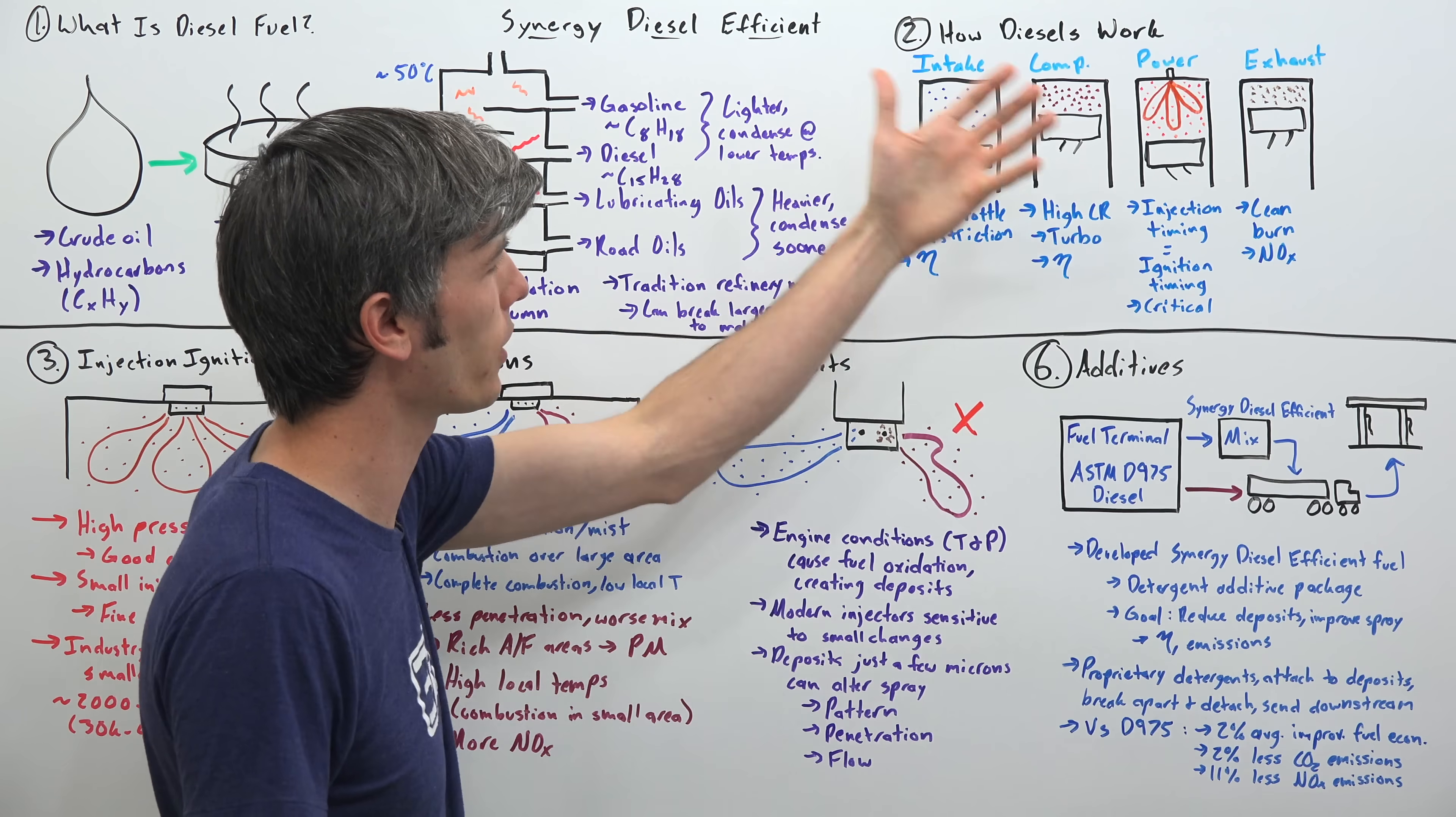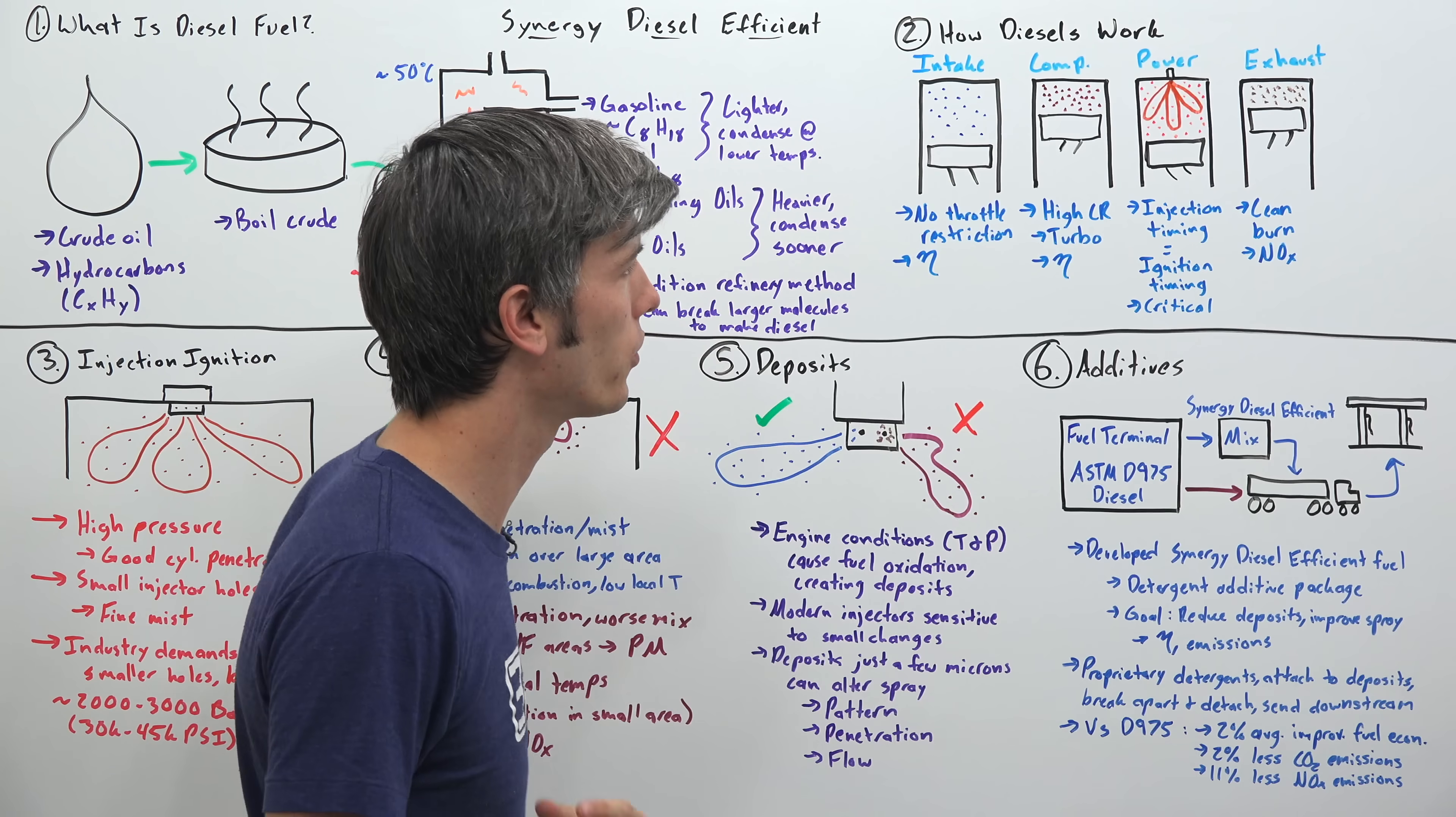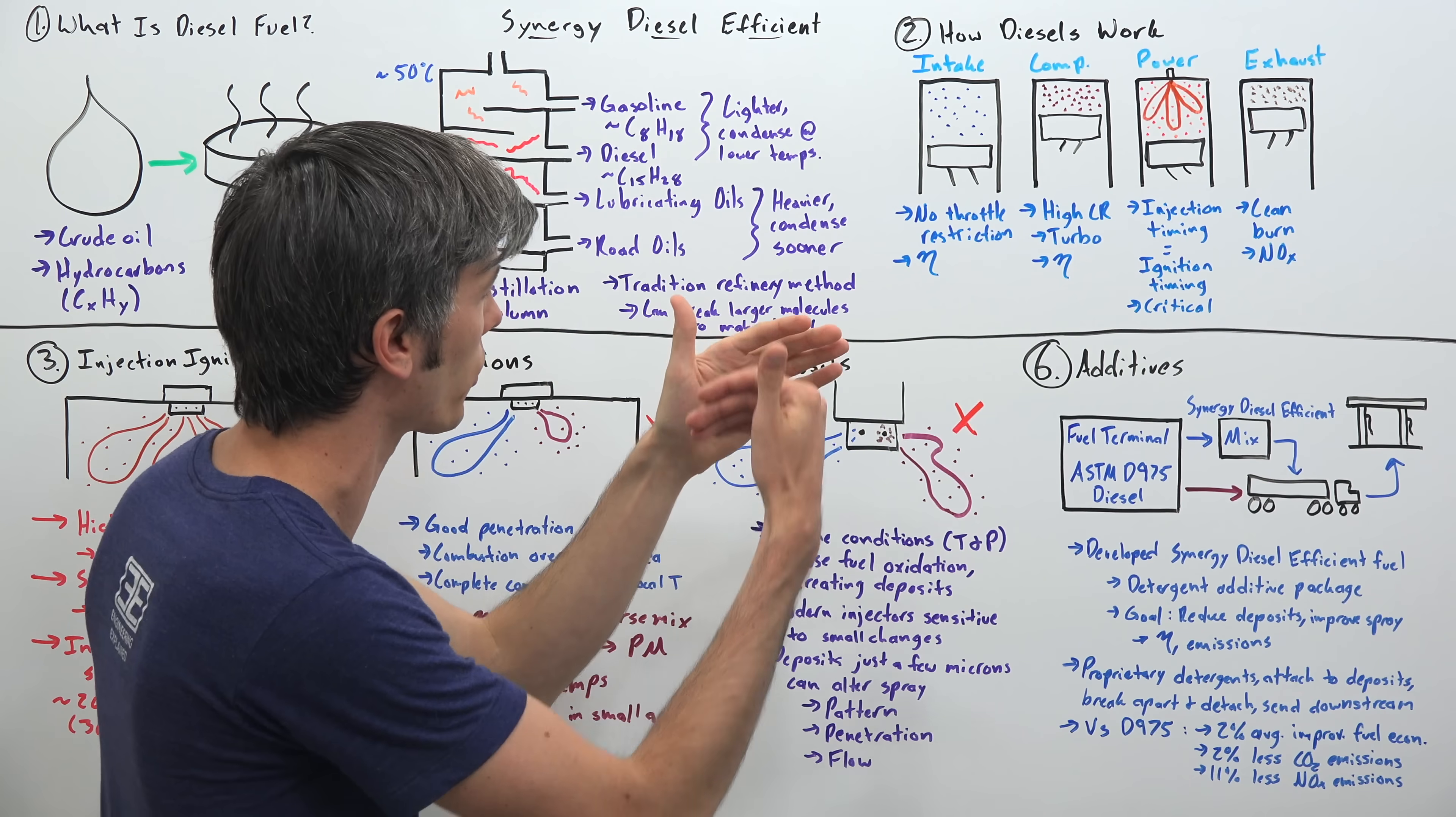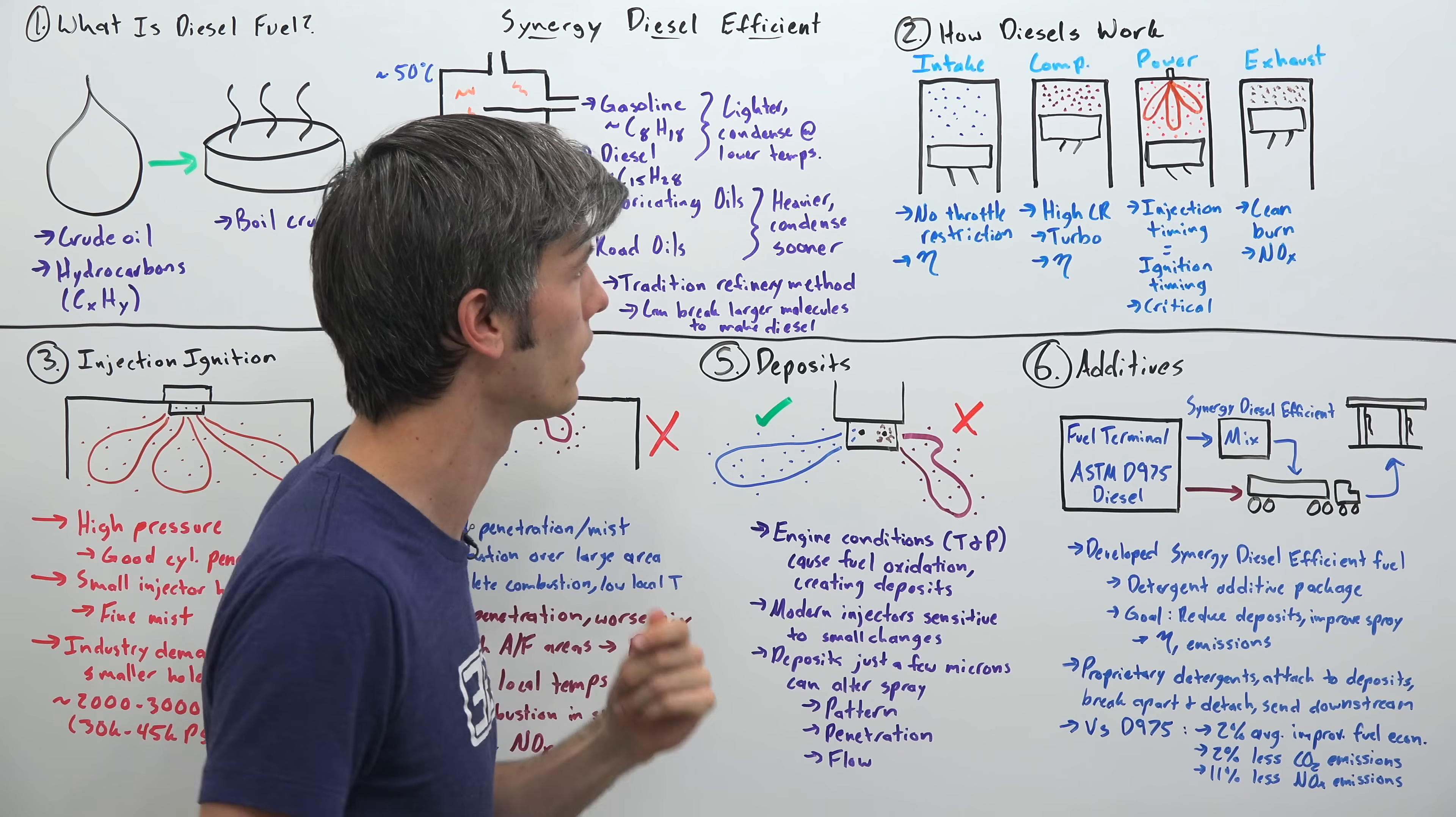So the process is very similar to a gasoline engine, but there are distinct differences. So you have your intake, compression, power, and exhaust strokes, but there's a few little differences here. So with the intake stroke, you don't have a throttle, generally speaking, that's restricting that intake air. And so as a result you have less pumping losses, and diesels tend to be significantly more efficient.